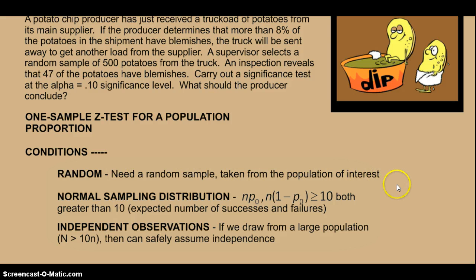Probably the toughest part for us and the part that gets confusing is the normal sampling distribution here. In this case, we need np₀ and n(1-p₀) both greater than 10. Now, p₀ in the potato chip problem, that's 8%. It's the hypothesized proportion, the proportion we believe is true. So those both have to be greater than 10, and that's the expected number of successes and failures.